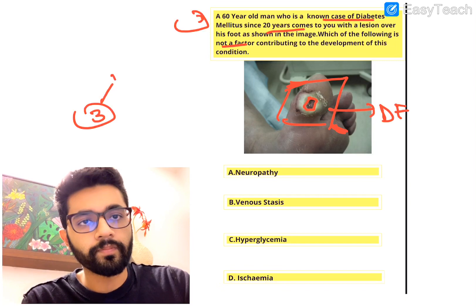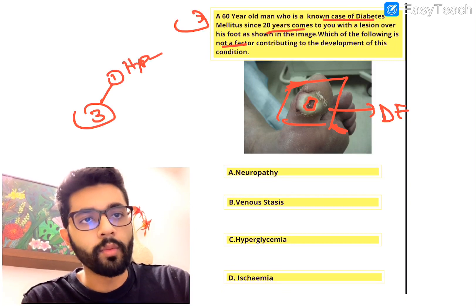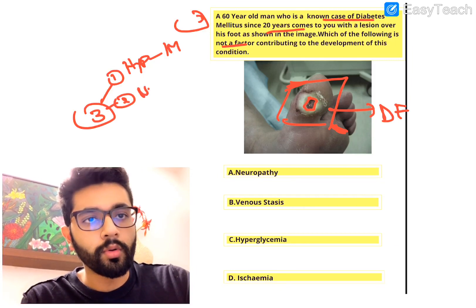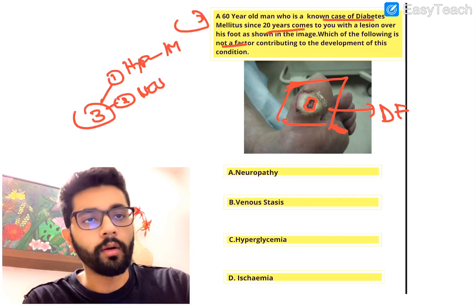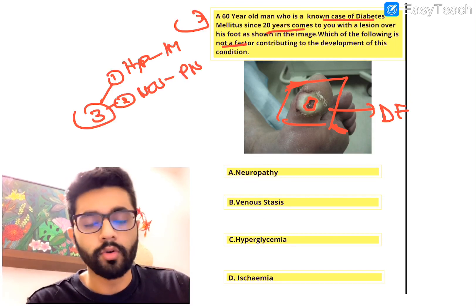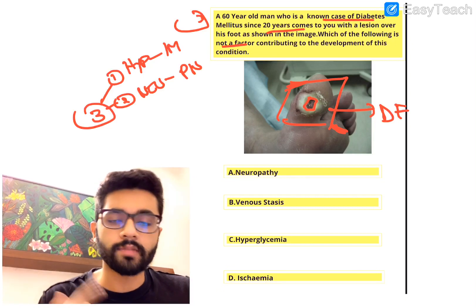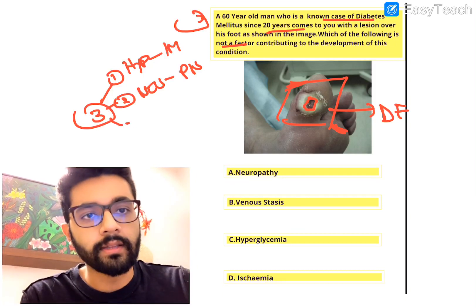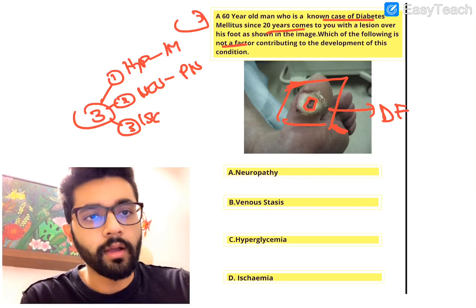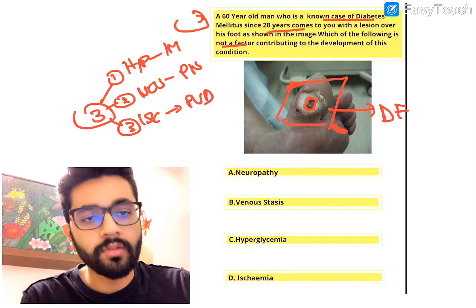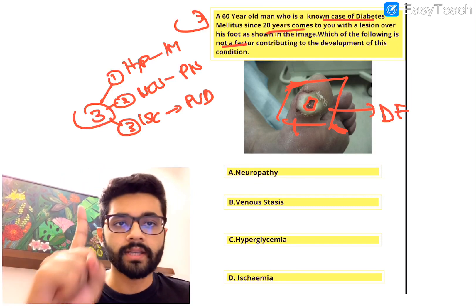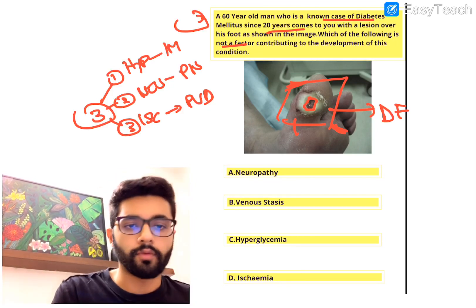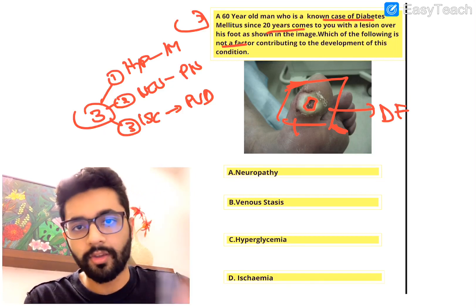Three contributing factors to diabetic foot ulcers: first, hyperglycemia, which leads to immunocompromise; second, peripheral neuropathy, which reduces sensation making the area prone to repeated trauma; third, ischemia due to peripheral vascular disease or atherosclerosis of vessels. So hyperglycemia, neural compromise, and vascular compromise together lead to diabetic foot ulcer. The answer is B) venous stasis - that's not a contributing factor. That's it for today, see you on Friday.